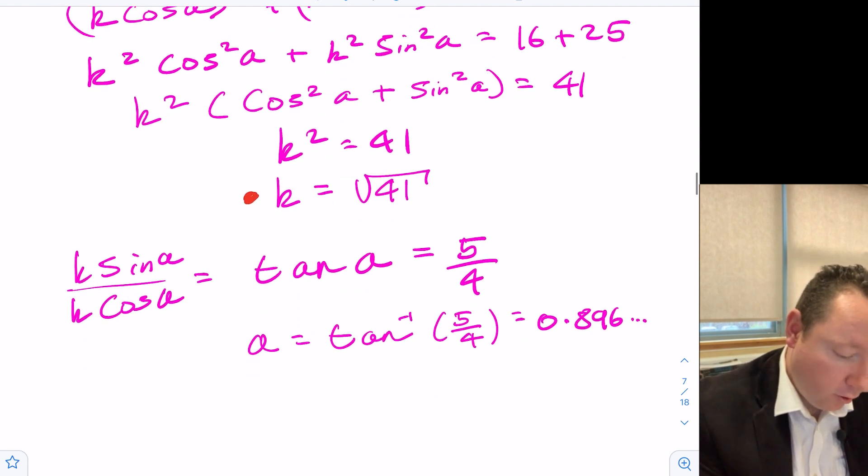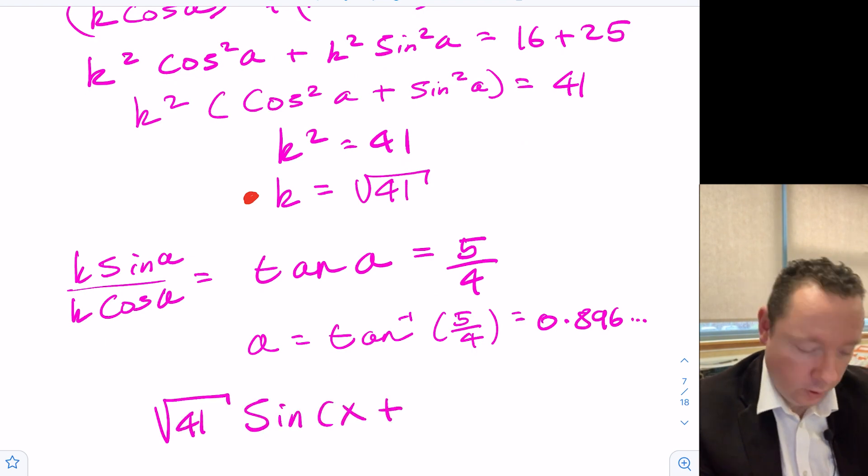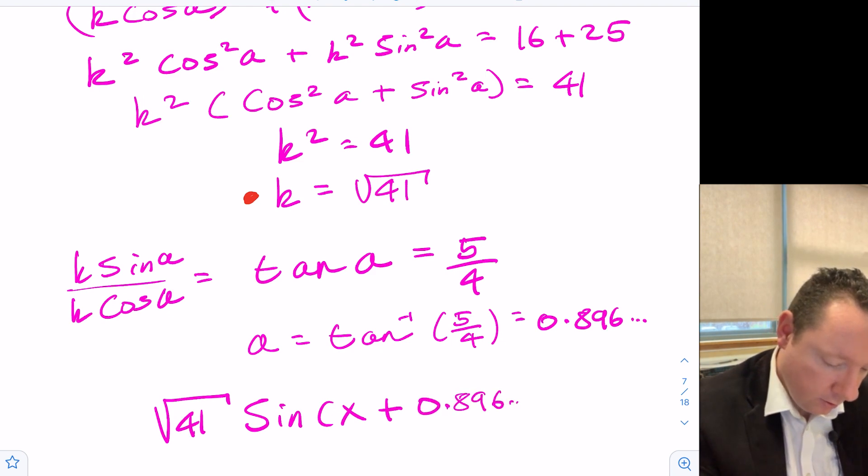So therefore, our final answer to write it in its full form is the square root of 41 sin of x plus 0.896 for our final mark.